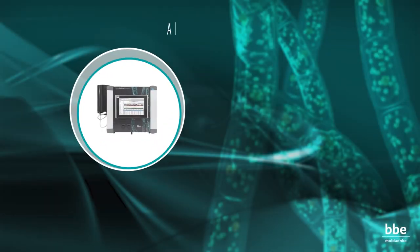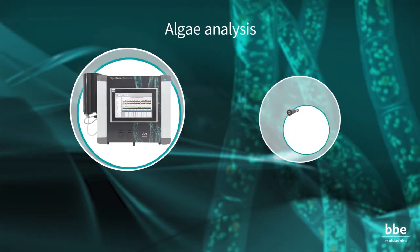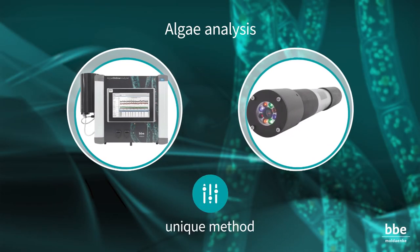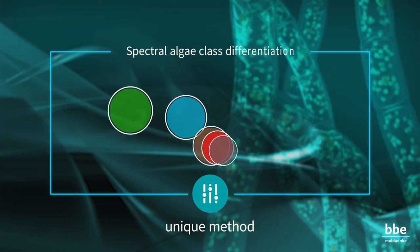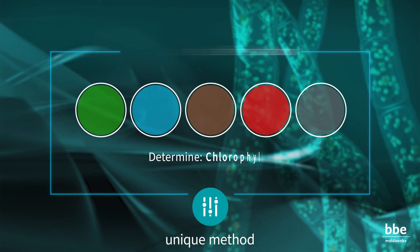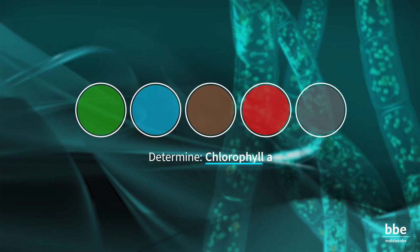The BBE devices for algae analysis use a unique method of spectral algae class differentiation to determine the content of chlorophyll A as a proxy for the biomass.